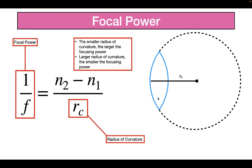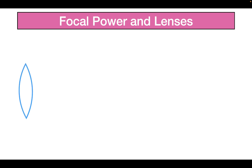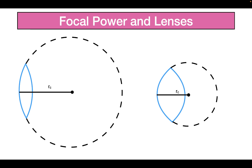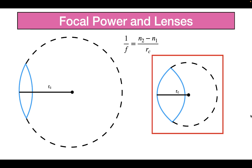So how can we modulate the radius of curvature? We can do so by rounding out the lens. If you take a lens and round it out, the radius of curvature decreases, which gives it a greater focusing power. The more rounded the lens, the lower the radius of curvature, and the lower the radius of curvature, the higher the focal power. This is the key concept our own lenses use in order to see objects that are close to us.